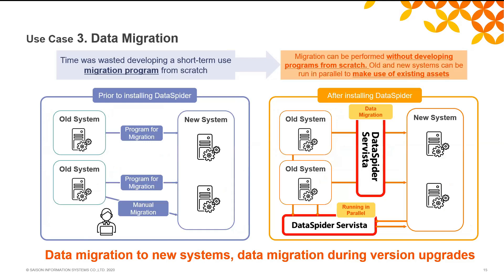Use case three: data migration. This use case explains how DataSpider Savista can be used when migrating systems. In general, system migration is done step-by-step while keeping some systems in operation. In this case, some processes are required only during migration, such as merging data from old systems into new systems. Since it is not wise to spend development hours on short-period processing, you may need to manually operate the systems. DataSpider allows you to create the integration process easily, so you can develop a migration program without spending labor cost.